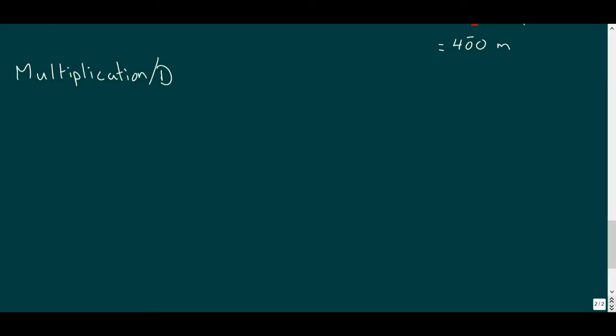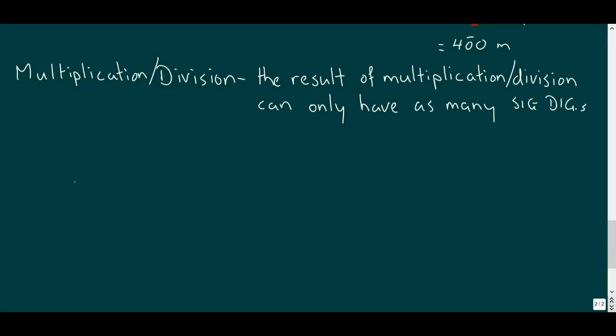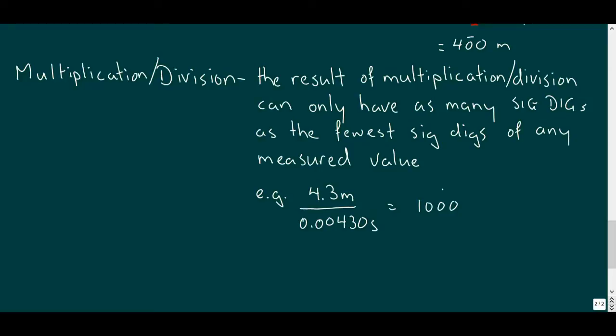Now we'll consider multiplication and division. The rule here is that the number of sig figs in the result is limited by the lowest sig figs of all the measurements used for the calculation. Since any higher order operations rely on multiplication or division, this rule applies for everything else. An example can illustrate this rule. We'll divide 4.3 meters by 0.00430 seconds to get a speed of 1,000 meters per second. But 4.3 meters has 2 sig figs, while 0.00430 seconds has 3. This limits our results to 2 sig figs, so we place a bar over the zero in the hundredths place value.